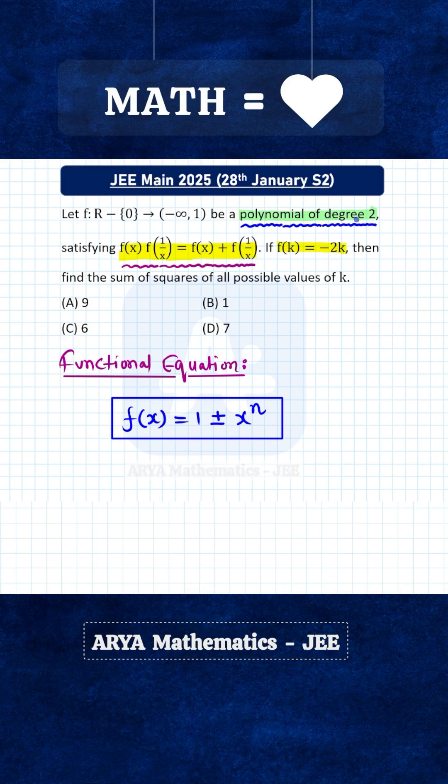Here it is given that f(x) is a quadratic polynomial, a polynomial of degree 2. So therefore f(x) must be either 1 + x² or 1 - x².